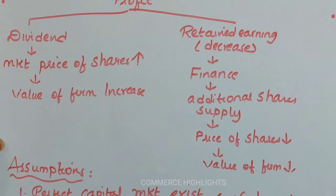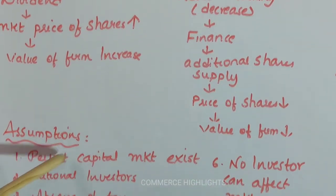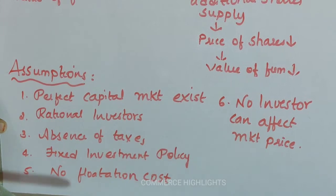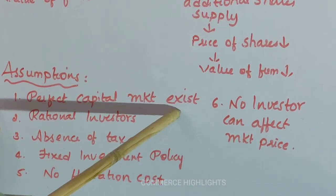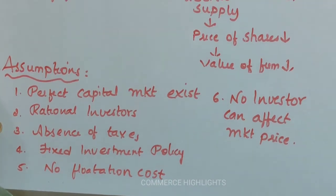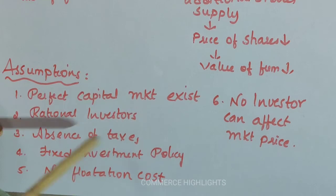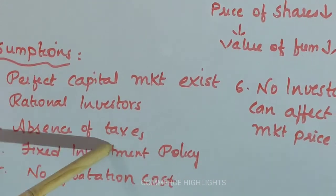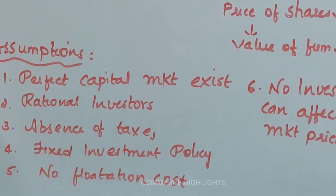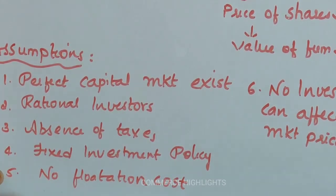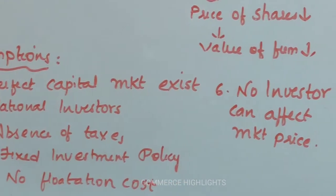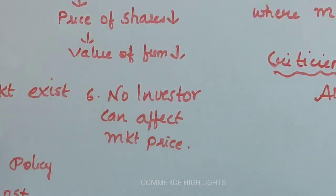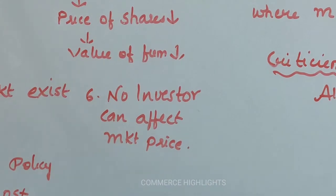This theory is based on the following assumptions. First, perfect capital market exists — buyers and sellers have perfect knowledge regarding the market and are free to buy and sell securities as they like. Second, rational investors — investors have full knowledge regarding the security market. Third, absence of taxes — there are no taxes present. Fourth, fixed investment policy — a firm follows a fixed rate of investment policy. Fifth, no flotation cost — no transaction cost for buying and selling of securities. Sixth, no investor can affect the market price. Based on all these assumptions, MM proposed this theory.